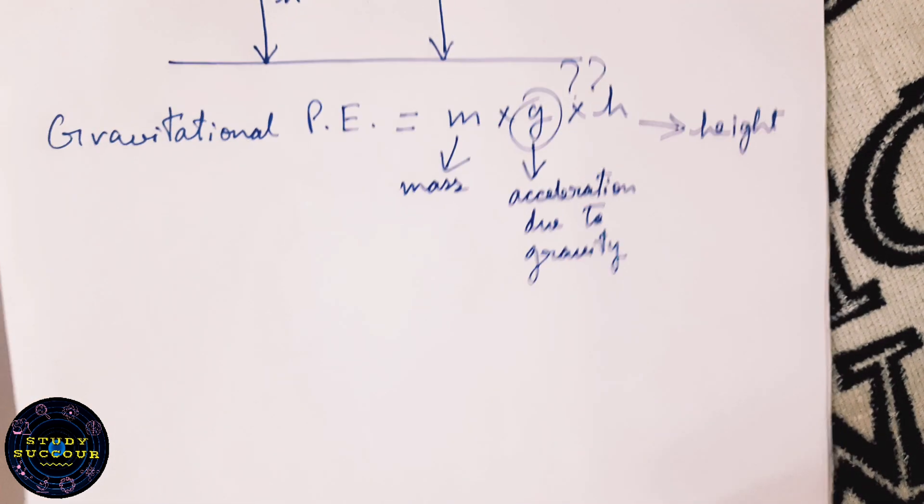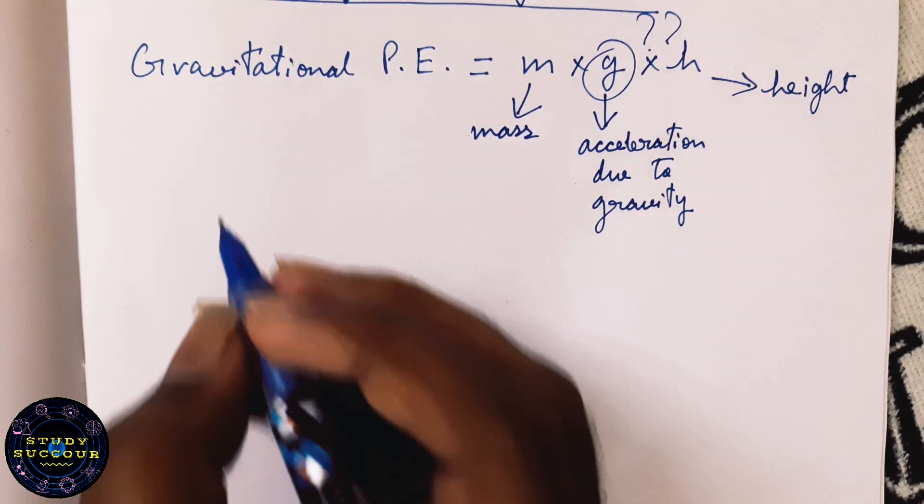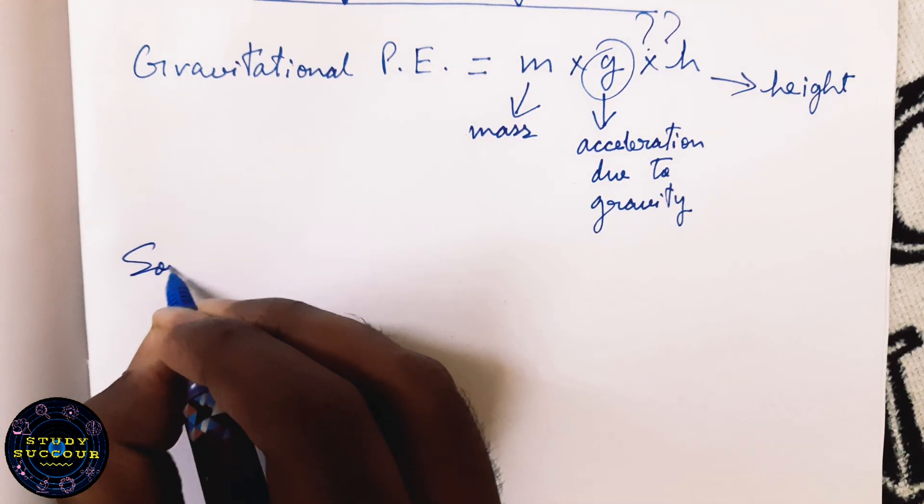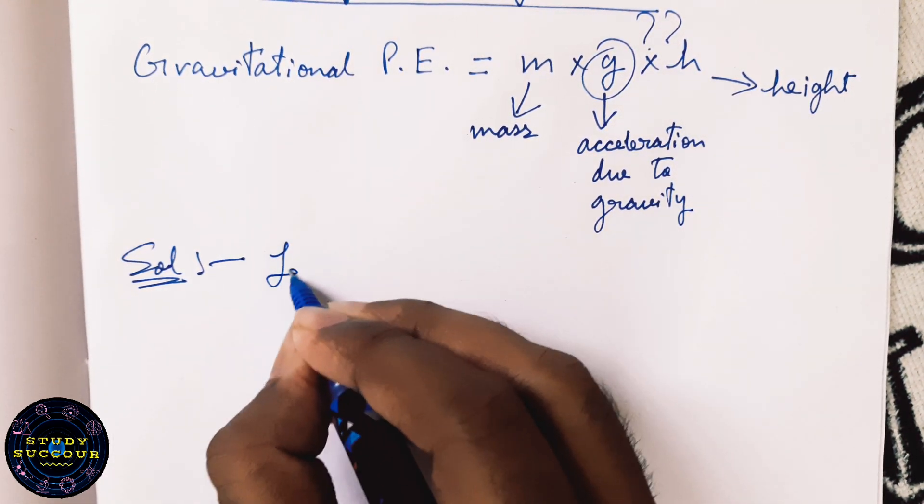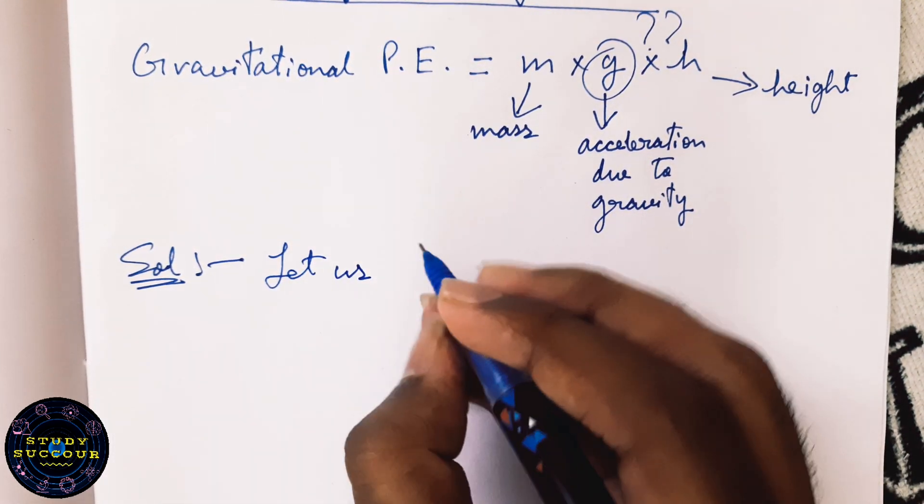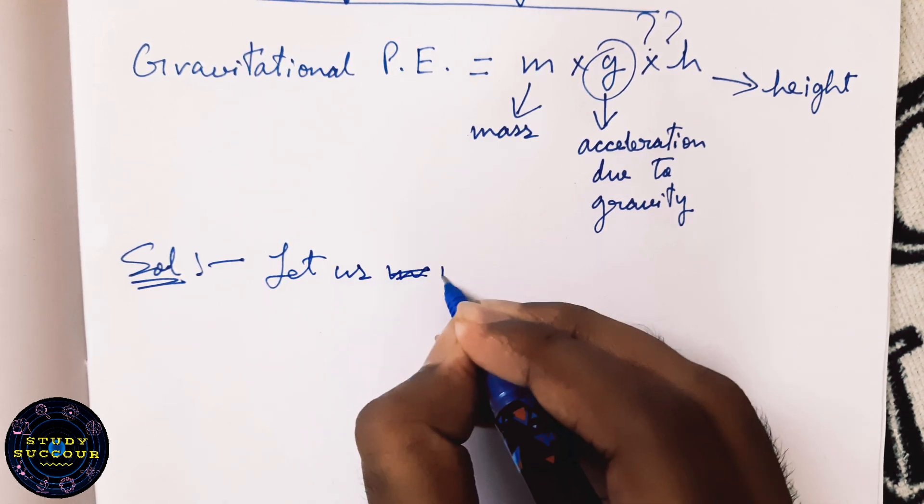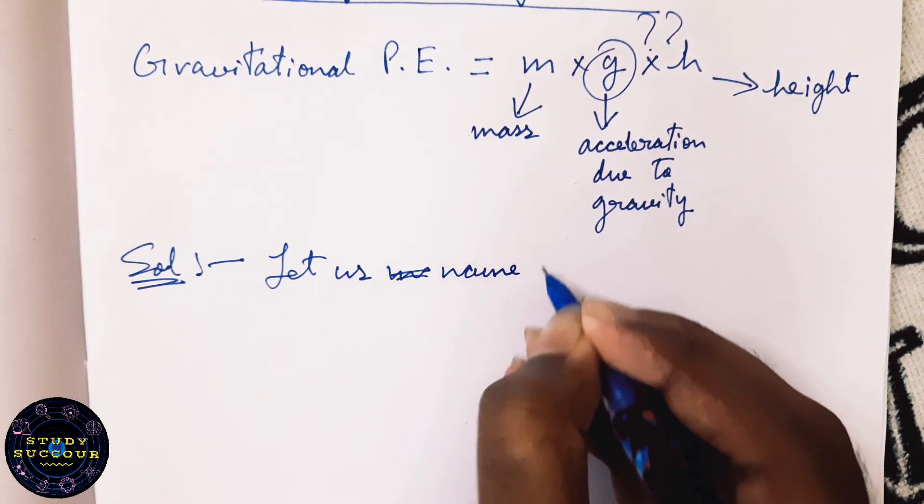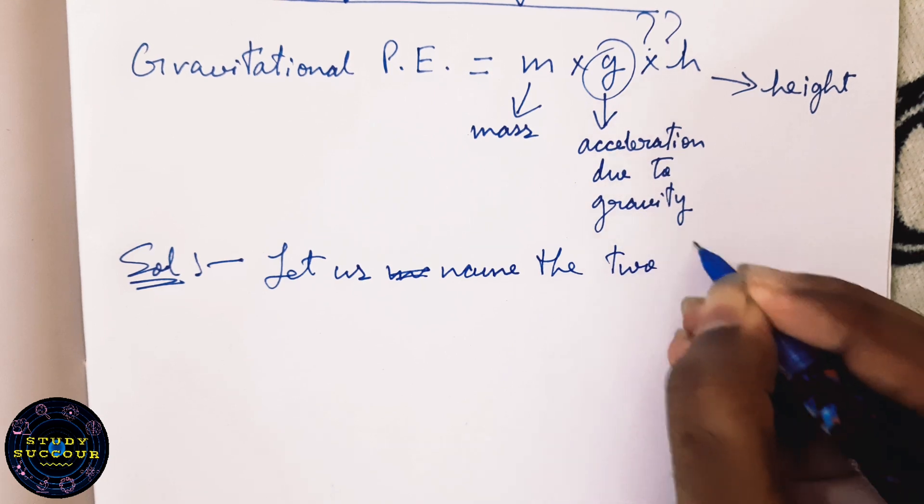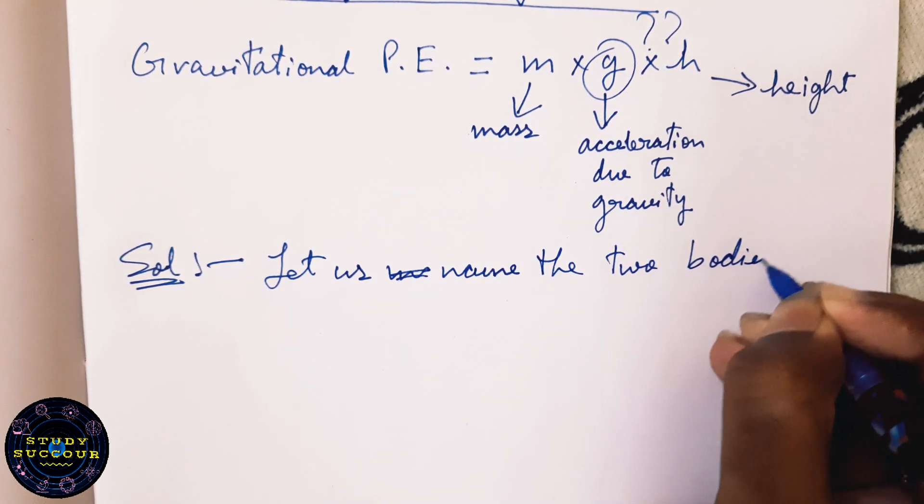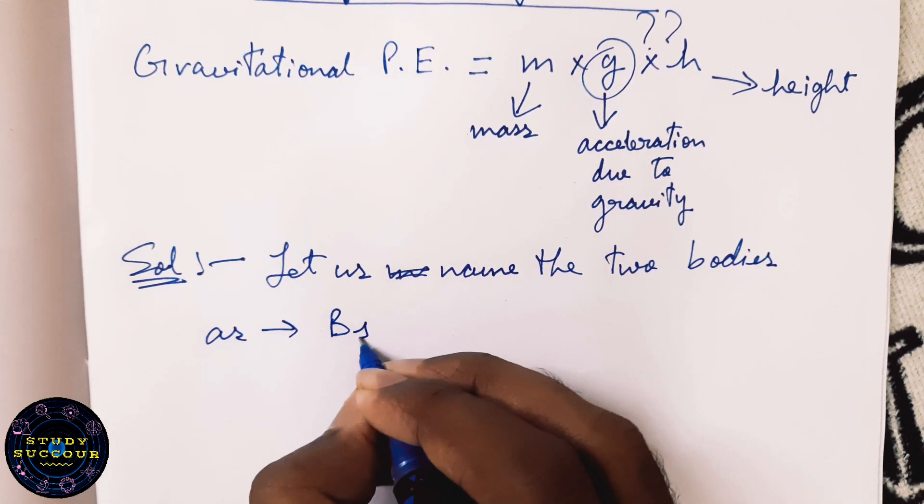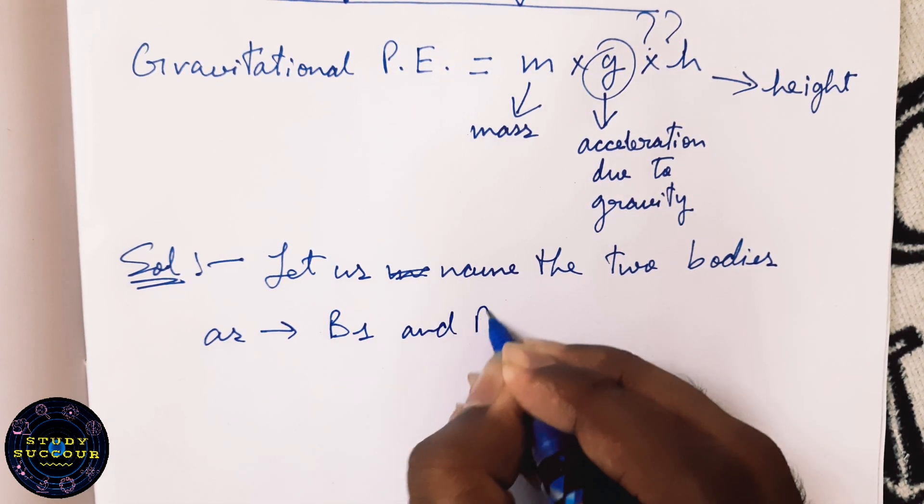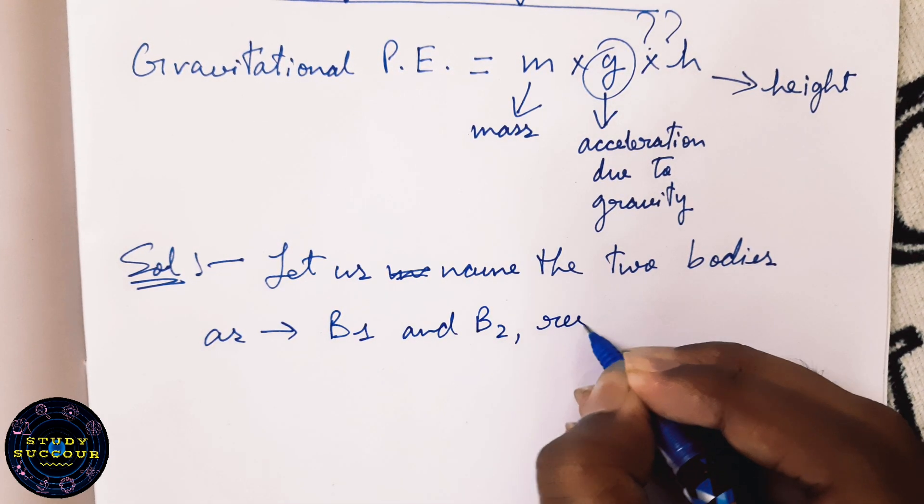so let us start the solution. First, let us name the two bodies as B1 and B2 respectively.